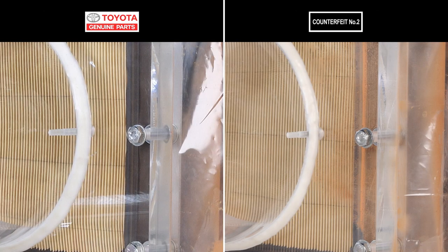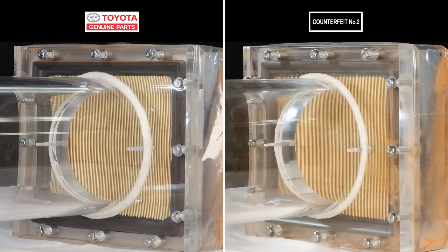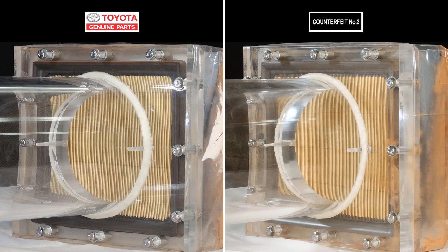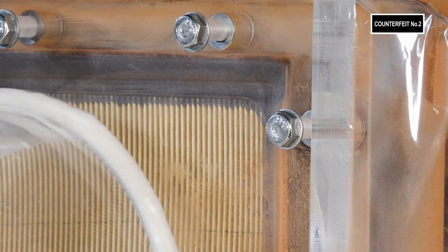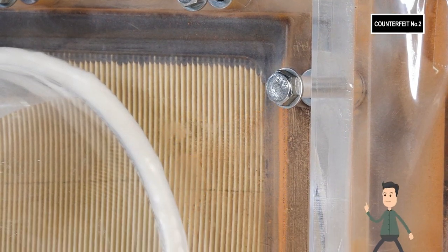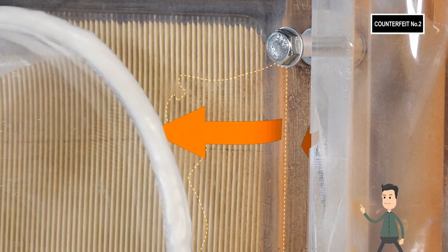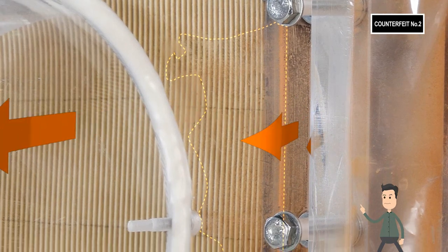We tried one more time and guess what? This time the dust came in from the side. With the genuine filter, it's still nice and clean. See, dust and even something like sand can come in from the sides when you use counterfeit filters. It might end up in your engine.